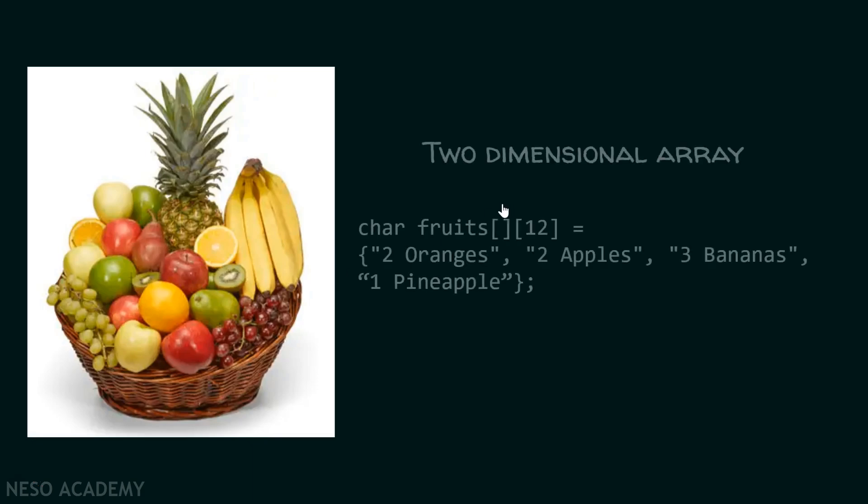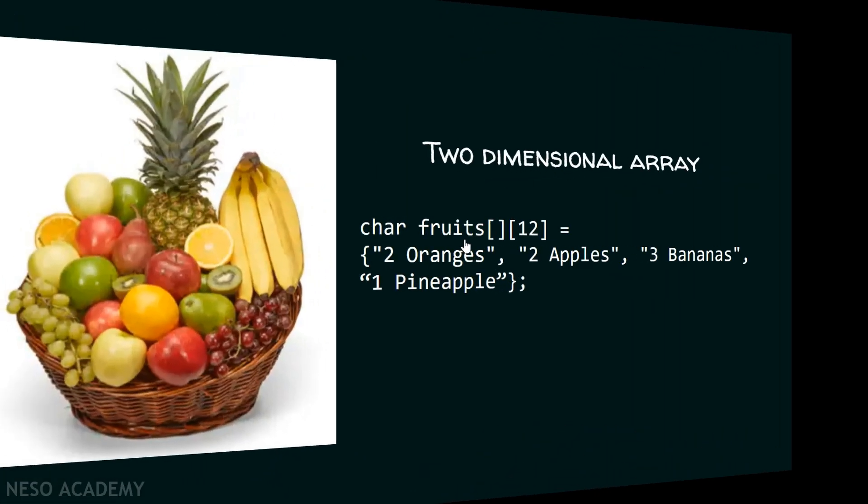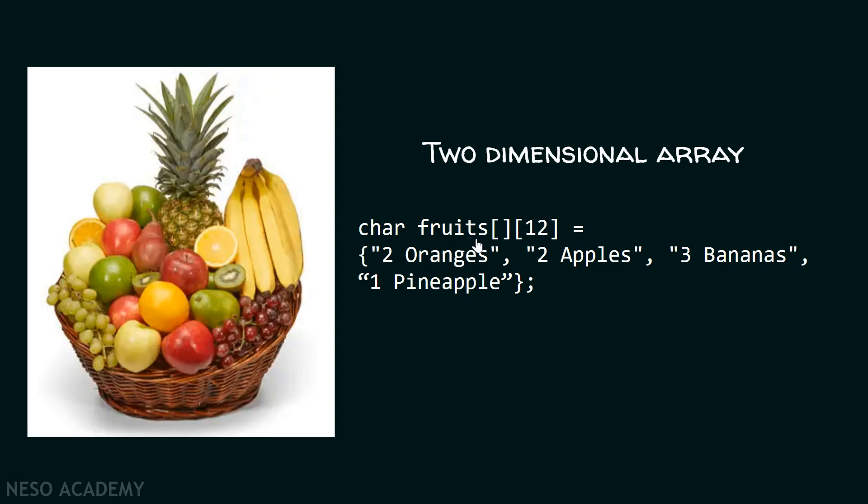If I want to store all this information, I can use a two-dimensional array which can accommodate all the strings. If I bought two oranges, then I can store that information within this two-dimensional array. Similarly, if I want to store all this information, then two-dimensional array could be a good alternative. Now, let me pictorially represent this two-dimensional array.